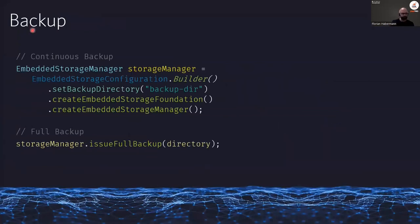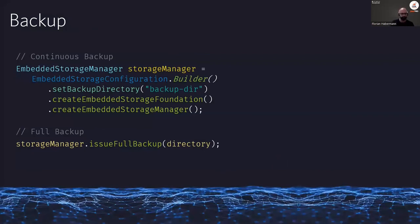At the end, a few more configuration items: if you set a backup directory, this initializes a continuous backup populated throughout the runtime of the application. Or you can call the issueFullBackup() method with a target location to write a complete backup of your database to a different file system or storage target.